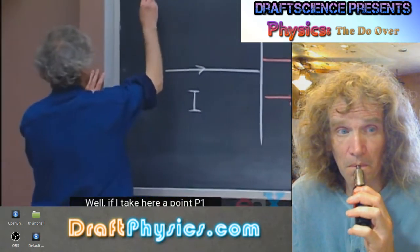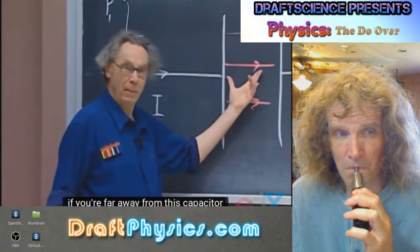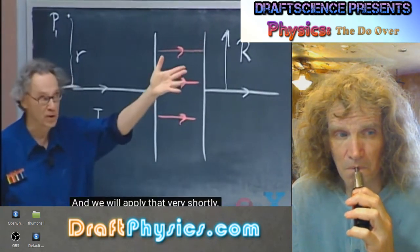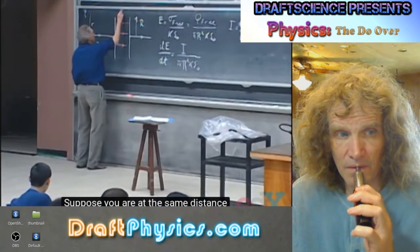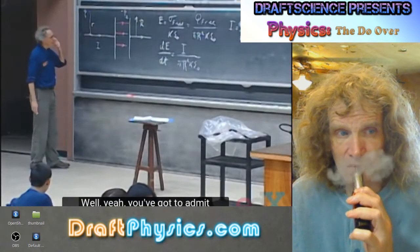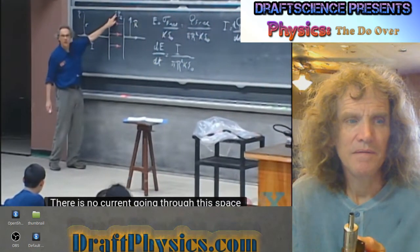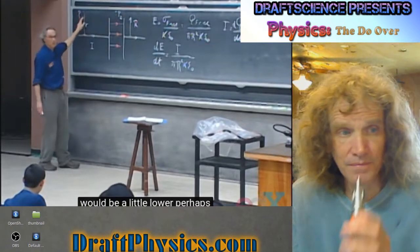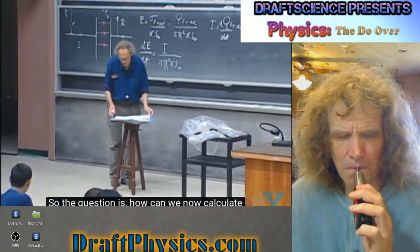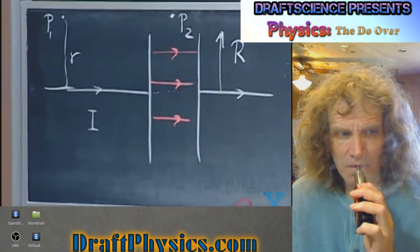Well, if I take here a point P1, at a distance little r from the wire, if you're far away from this capacitor, it's hard to believe that Ampere's law would not give the right answer. Suppose you are at the same distance from this line here, at point P2. Well, you've got to admit, there is an interruption of current now. There is no current going through this space. And so, you expect that the magnetic field here would be a little lower, perhaps, than it is here.